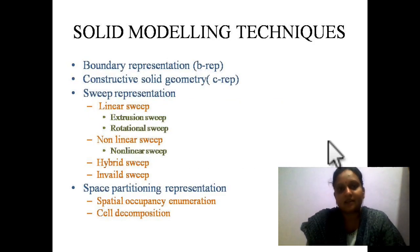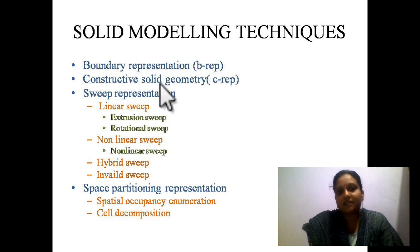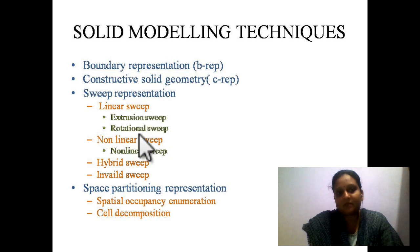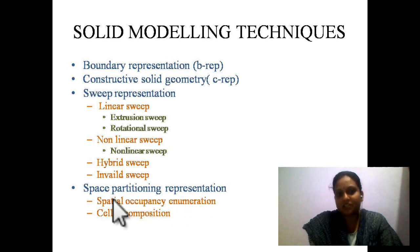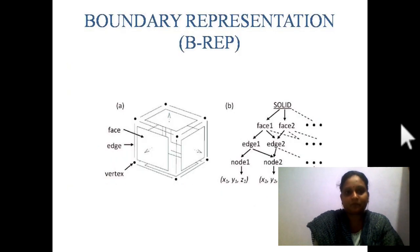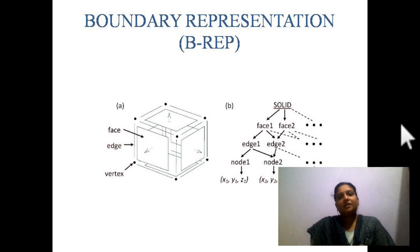There are different geometric modeling techniques. The first is boundary representation (B-rep). Next is constructive solid geometry (CSG). Then sweep representation, which is divided into two types: linear sweep and non-linear sweep. Linear sweep has two subtypes: extrusion sweep and rotational sweep. There is also hybrid sweep and invalid sweep. Finally, space partitioning representation includes spatial occupancy enumeration and cell decomposition.